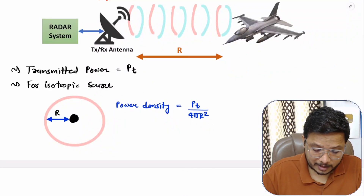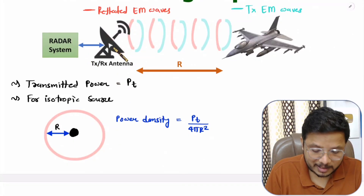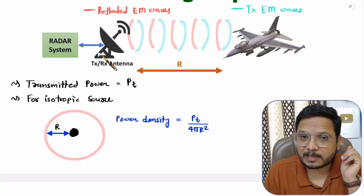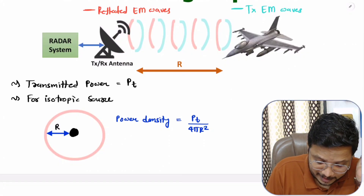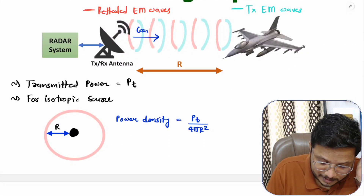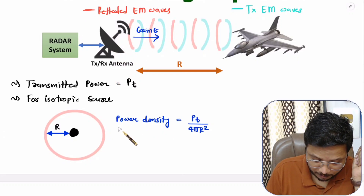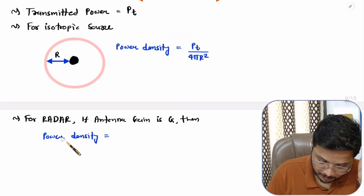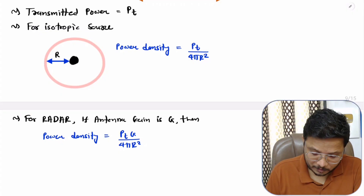In the radar system we don't use an isotropic source — we use a directional antenna. If this antenna has gain G towards the object, then the power density is the isotropic power density multiplied by gain G. So power density becomes Pt·G divided by 4πr². This is the power density in the direction of the object at distance r.